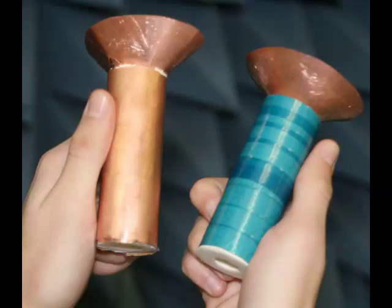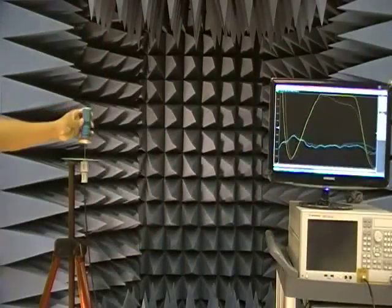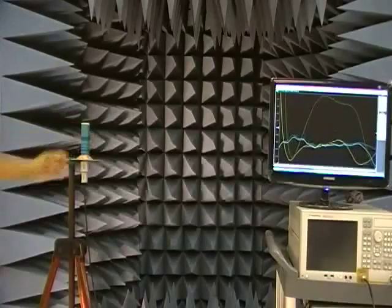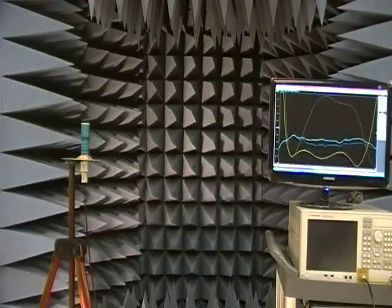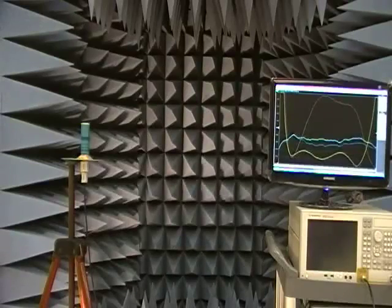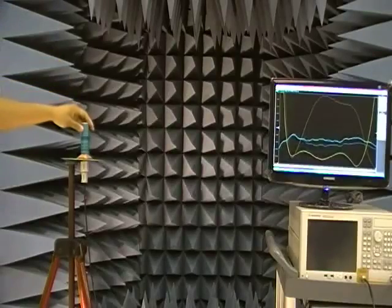And now, of course, we're going to do the same slip-on procedure with the fractal metamaterial. Slipping this fractal metamaterial on top of the monopole produces a huge difference. The bandwidth is essentially tripled and the gain even increases as the frequency increases. That's a startling and unexpected result.